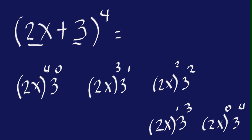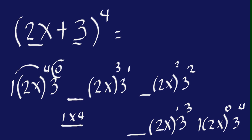Now just like the previous examples, the first and last coefficients are going to be 1. The first and the last are always 1. To get the next coefficient, we multiply that 1 times 4, then divide by the exponent 0 plus 1. That's 4 over 1, which is 4.